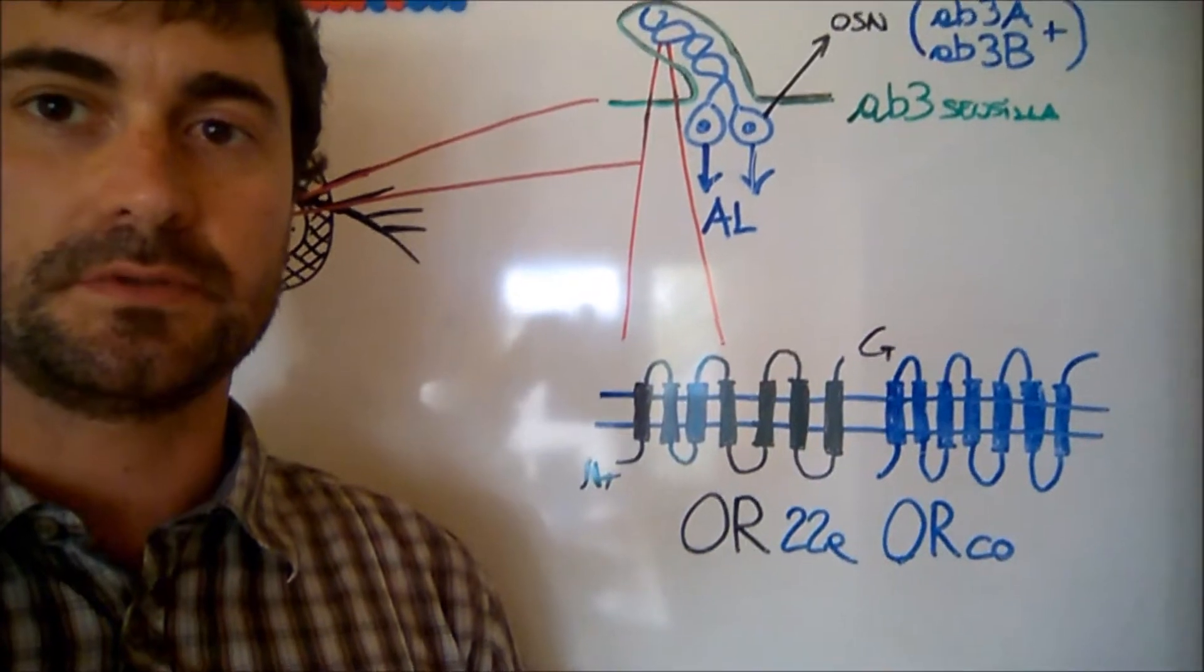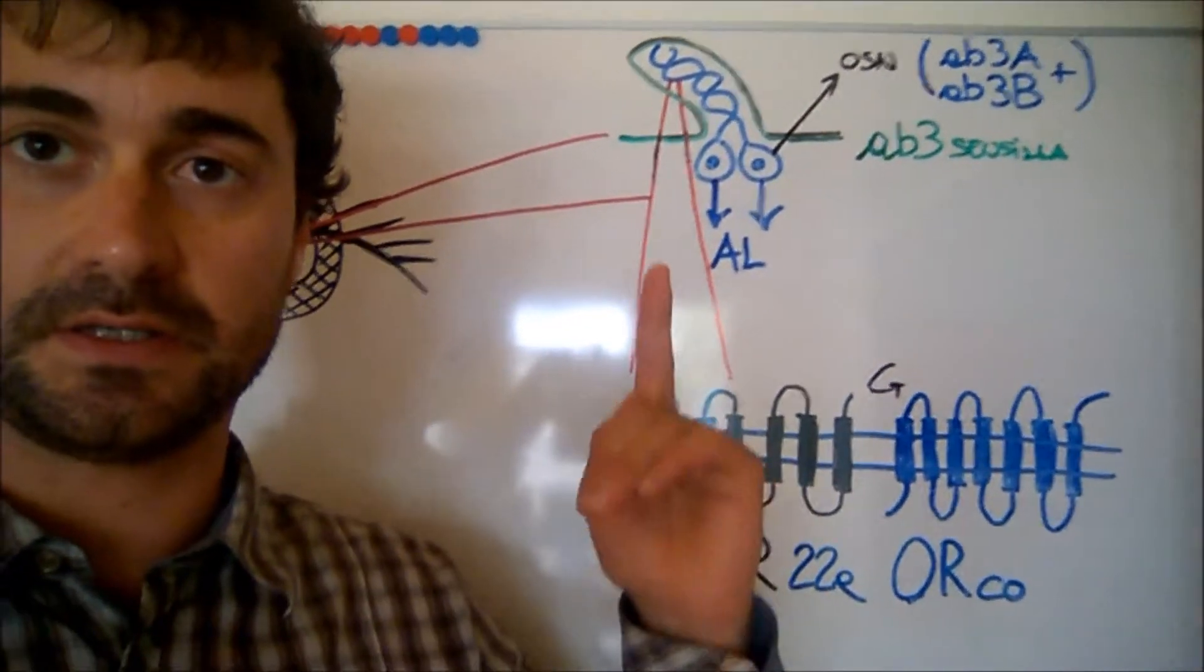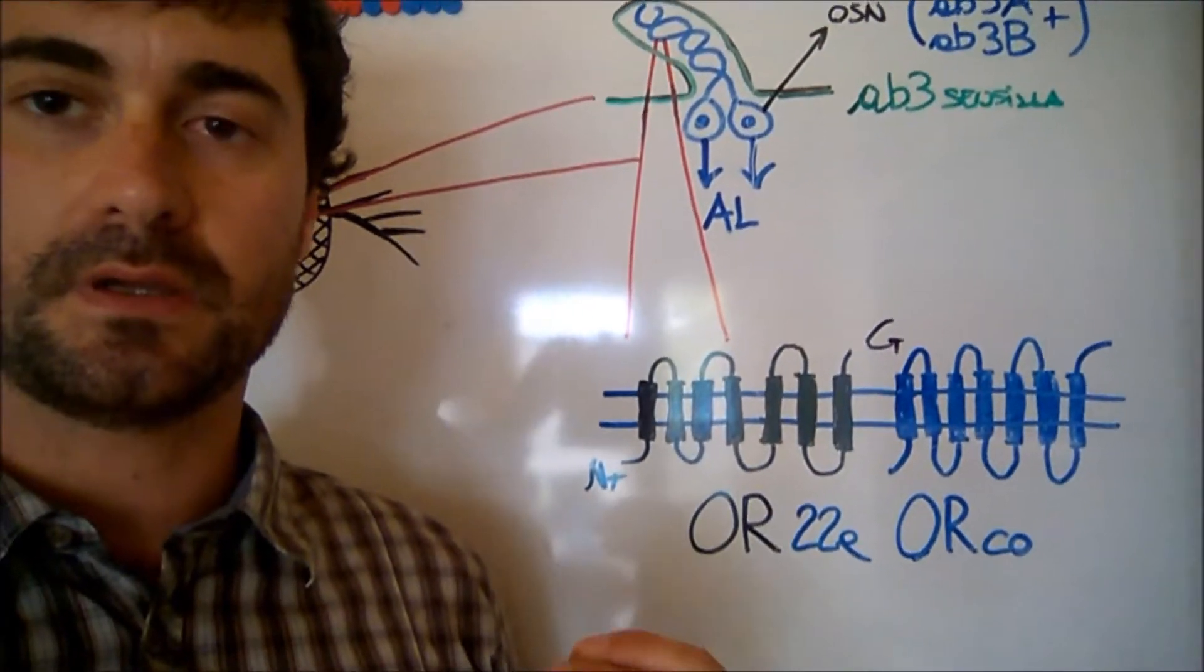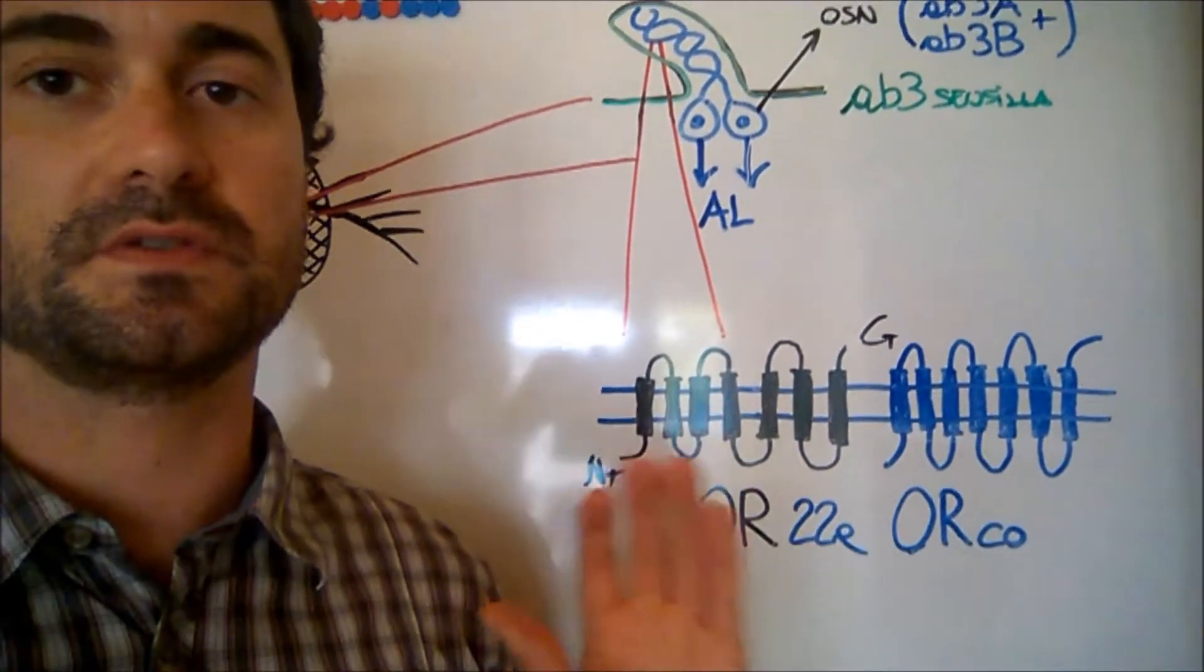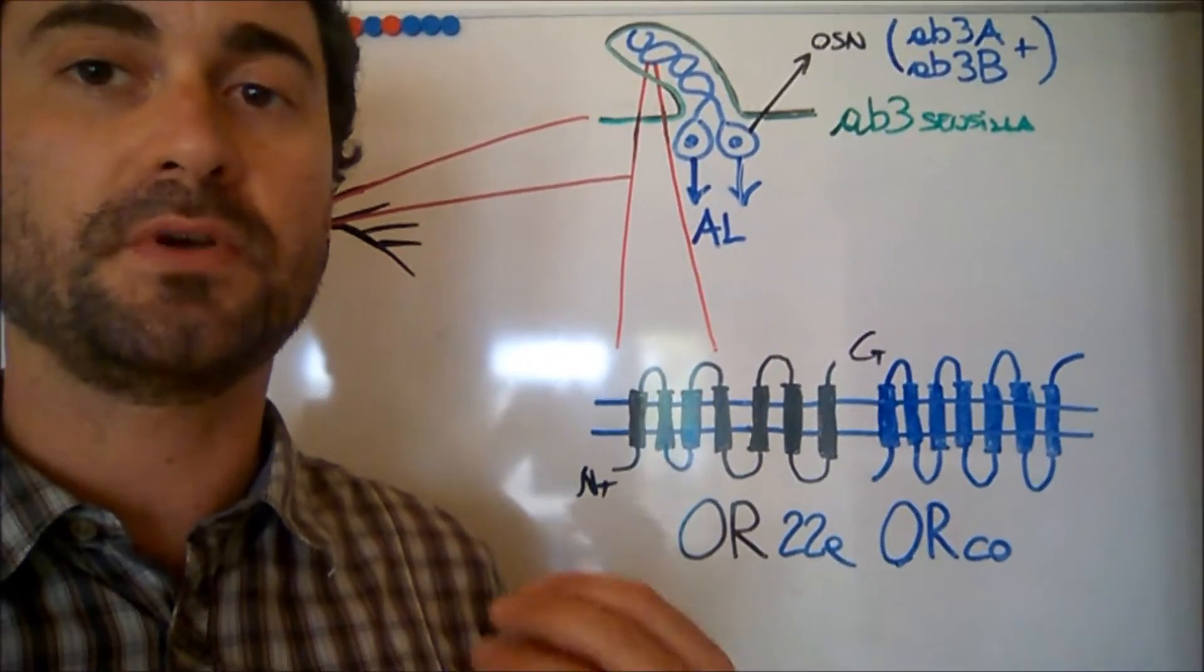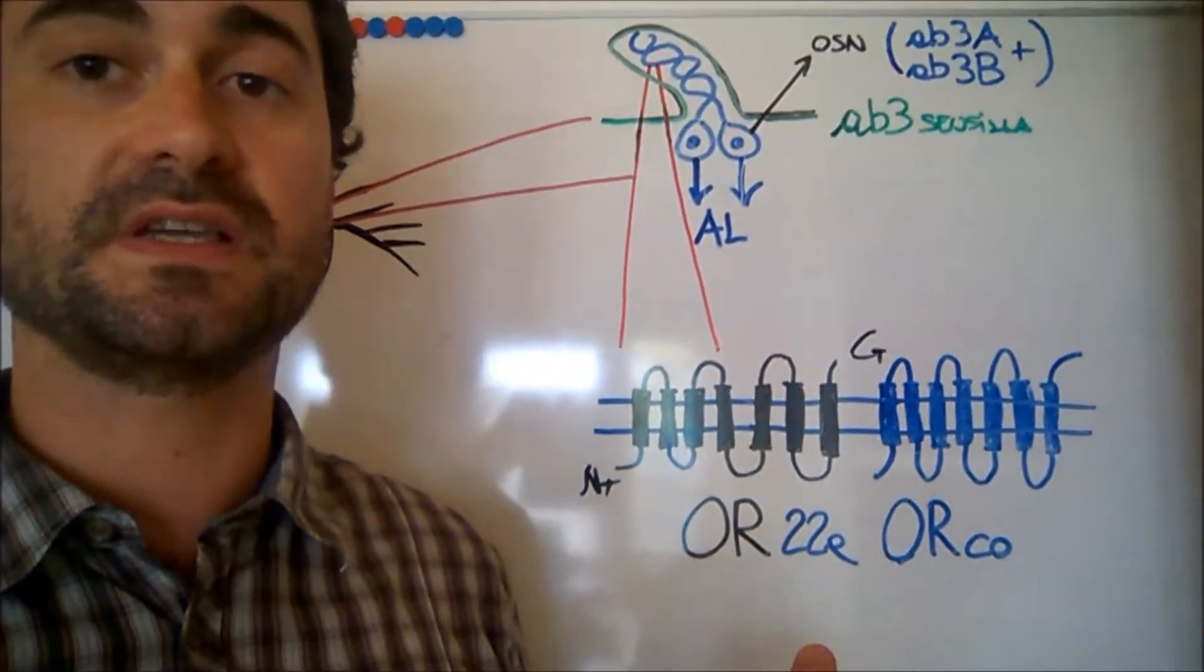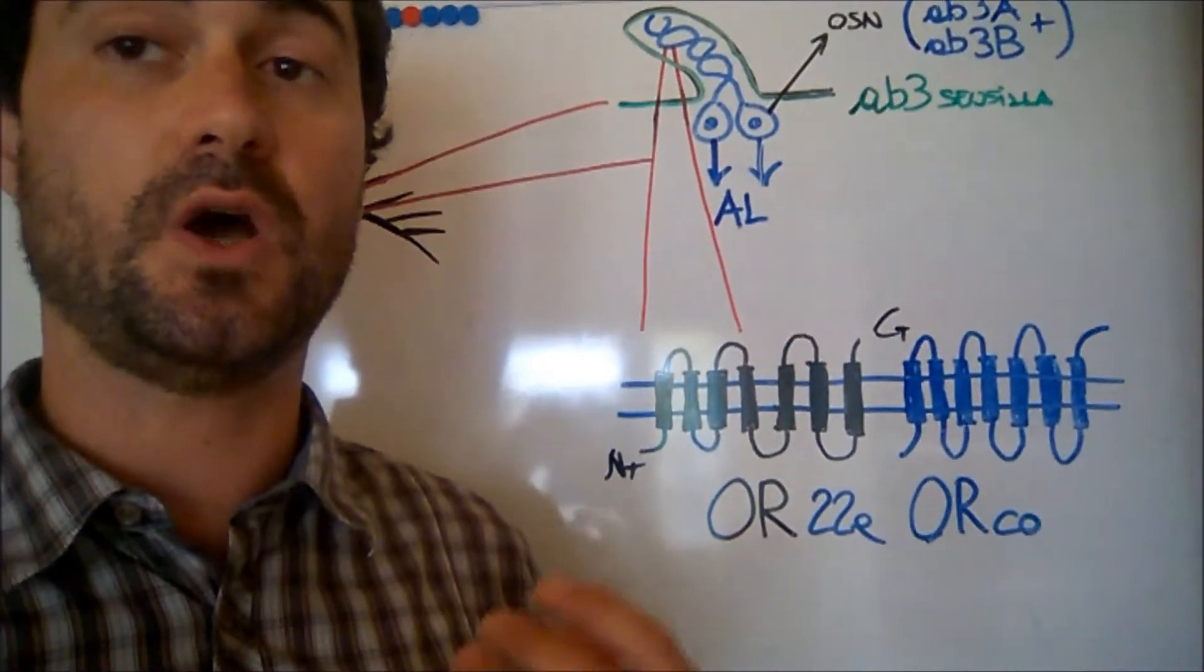Olfactory receptors are seven transmembrane proteins expressed in olfactory sensory neurons. The stoichiometry they have with the olfactory coreceptor is not known yet. What we know is that they are co-expressed with this receptor, and they activate ionotropic or metabotropic mechanisms in the plasma membrane of the olfactory sensory neurons, starting from their sensing of specific odorants.